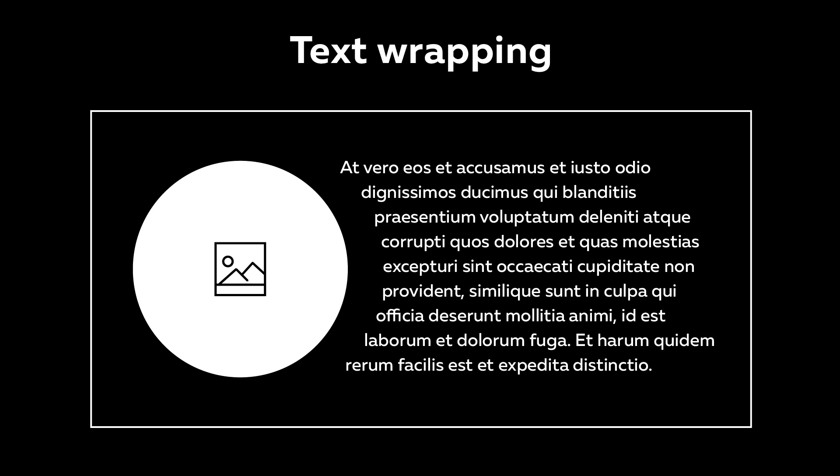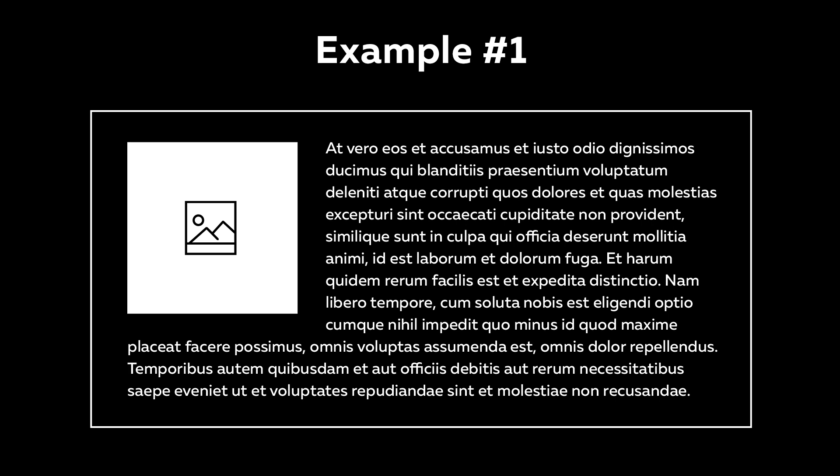Today I will talk about how to create non-standard text wrapping. You will learn about some CSS properties that I'm sure you rarely use at work. If you already know a lot of CSS, then you can solve these problems. For example, how to make text wrap around a rectangular image. That's right, here you need to use the property float.